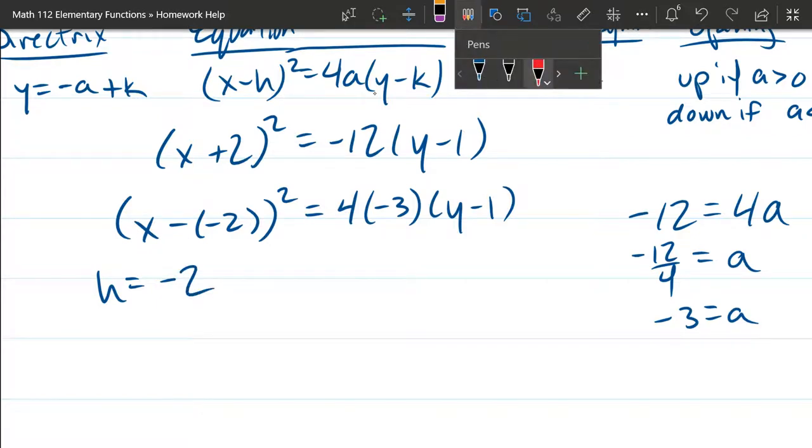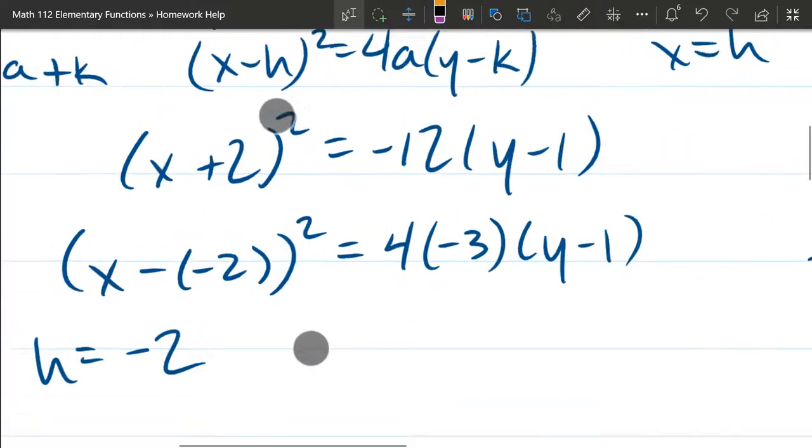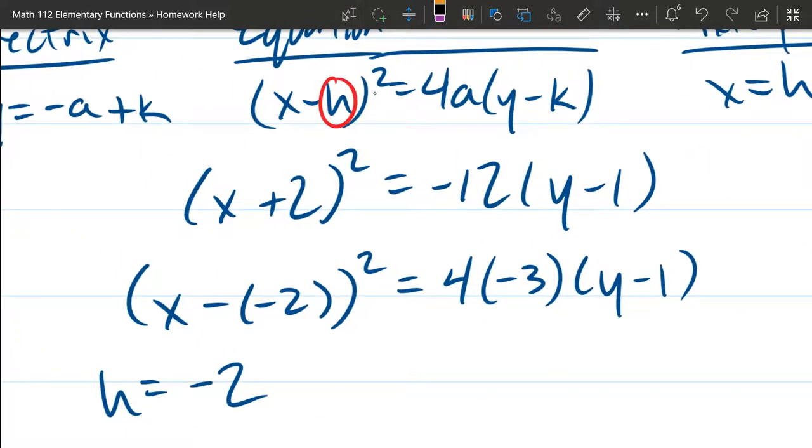So we got minus h, so that means h is negative 2. And if this is tricky because there's an extra negative, just think, I want to know what is h. What's right there? What's subtracted? That's subtracted. So that's why h is negative 2.